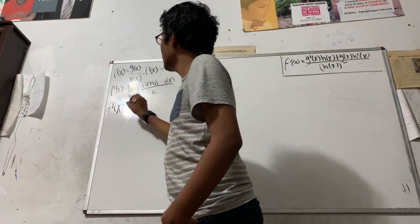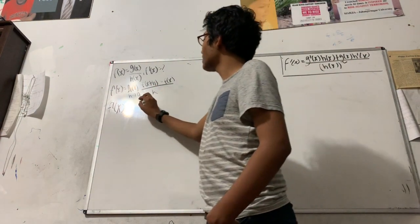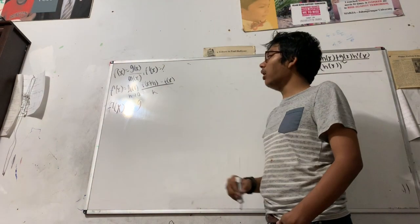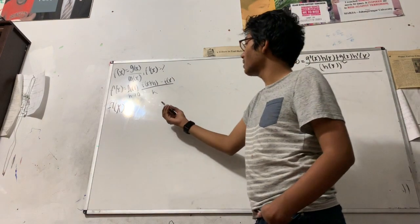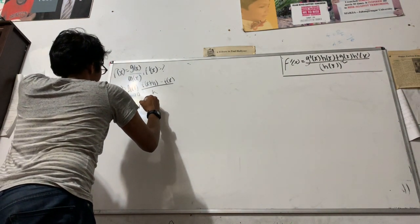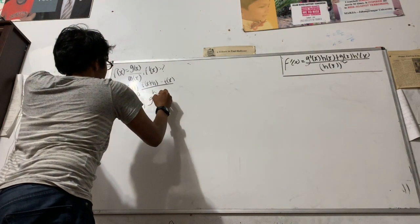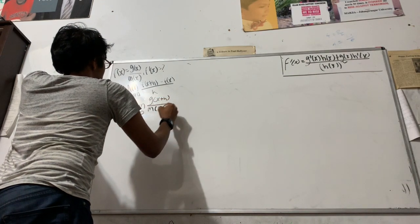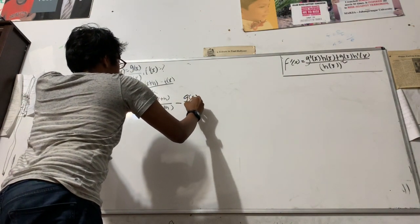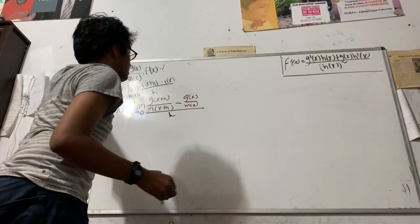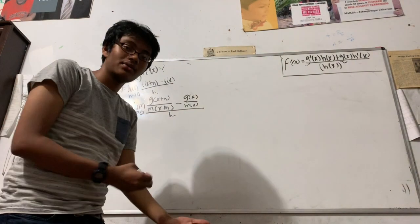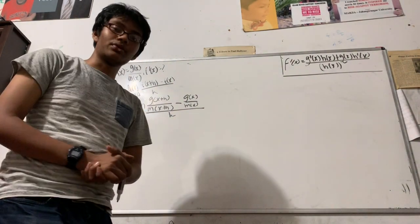Let's go ahead and plug that in. What is f of x plus h? Well, it's simply g of x plus h over m of x plus h — let me use m for the denominator function so we don't get mixed up with h as the increment. So the limit as h approaches 0 becomes g of x plus h over m of x plus h, minus f of x, which is g of x over m of x, all divided by h. Now we have two fractions in our numerator. Whenever we have fractions, we try to make common denominators — good algebra.